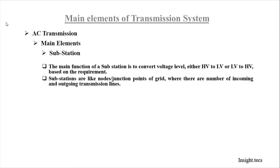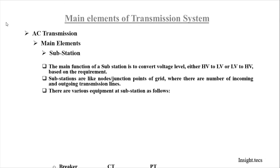The substation acts like a node or a junction point in the grid, where there are a number of incoming lines at some voltage levels and other outgoing lines at different voltage levels. There are a number of equipments used in the substation to perform this voltage level changing.